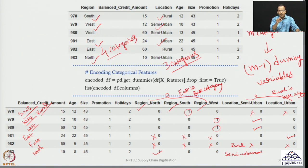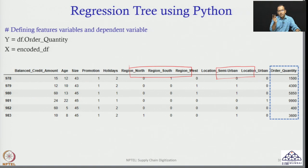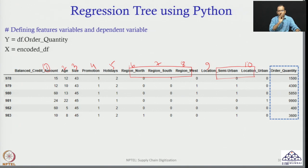Now we have done the data processing — categorical variables have been converted into binary variables. You will notice the number of variables has actually increased. Earlier I had 7 feature variables. Now, instead of just region, I have 3 variables; instead of just location, I have 2 variables. So the region variable has been converted into 3 variables and the location variable into 2 more variables, giving me a total of 10 independent variables. The dependent variable remains order quantity.